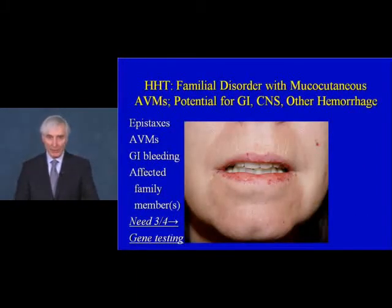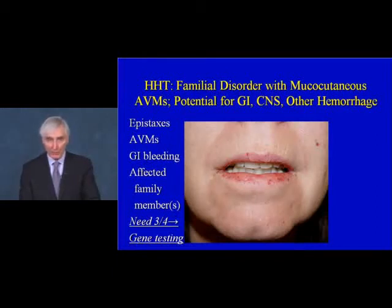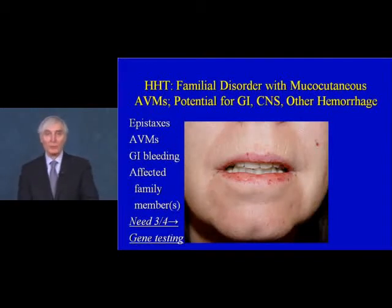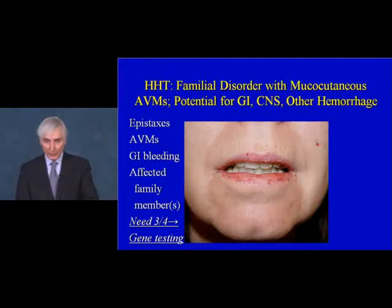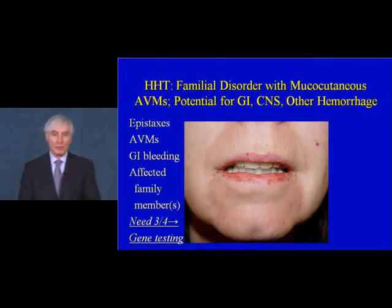In hereditary hemorrhagic telangiectasia, small arteriovenous malformations occur around the mouth and lips. To make a diagnosis, one considers nosebleeds, the presence of AVMs on the skin or mucosa, GI bleeding, or a similarly affected family member. If three of the four criteria are present, gene testing is justified and a provisional diagnosis of HHT can be made. This is important to recognize because AVMs can exist in the brain, lungs, and liver, giving rise to the potential for catastrophic hemorrhage in the future.